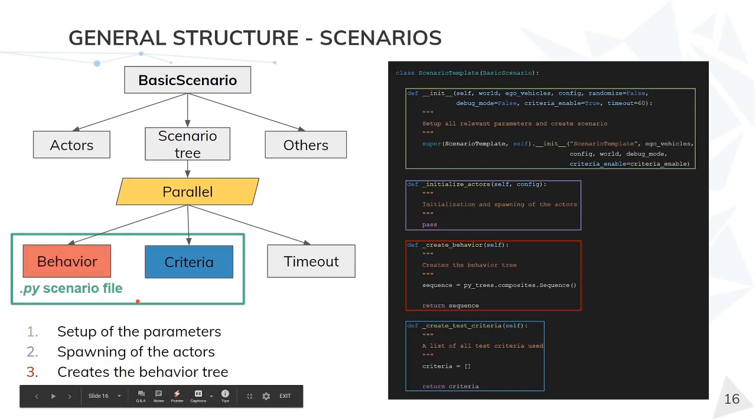The structure of the scenario file can be seen on the right and has at least these four functions. The first one is, as always, an initialization of the class. This initialization has to call to basic scenario initialization. The second one is the initialize actor function. Here we initialize and spawn all the actors of the scenario. This function is automatically called by the initialization function at basic scenario.